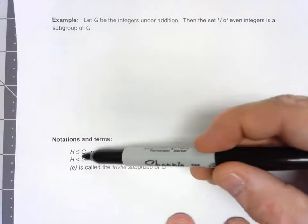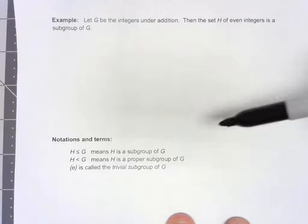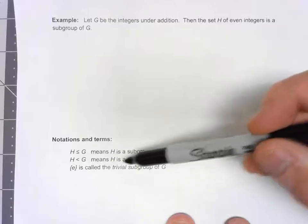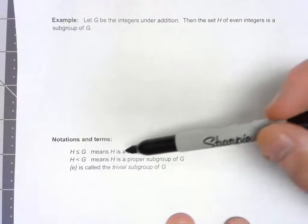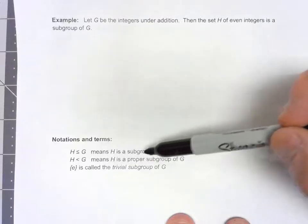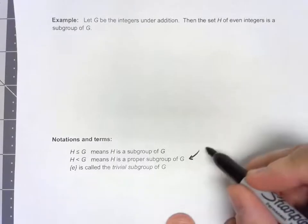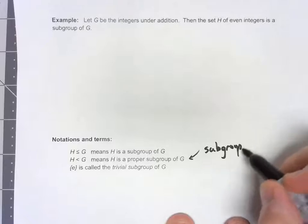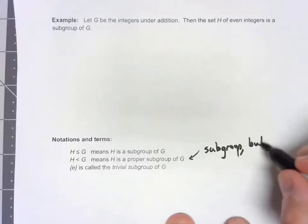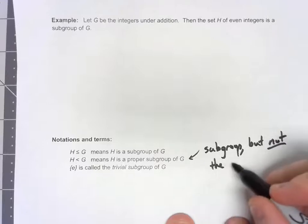And just like less than means that it can't actually be equal, we're going to mean the same kind of thing here. H less than G is going to mean that H is a proper subgroup of G. That is, it's a subgroup but not the full group G.